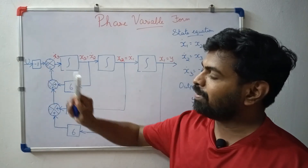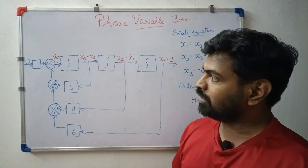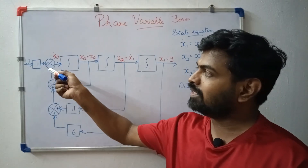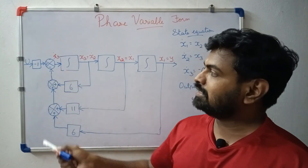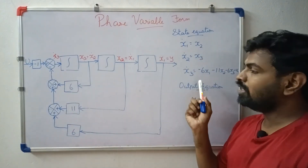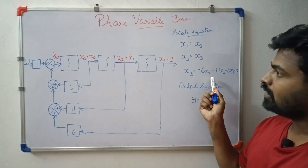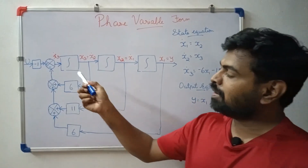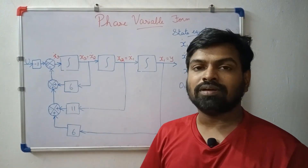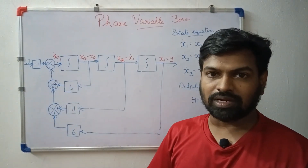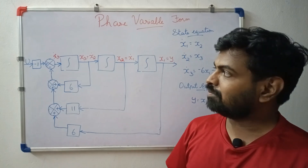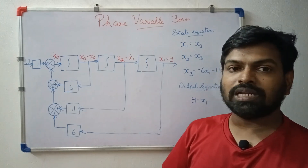We have minus u. So we have the complete set of equations, and now we have the full block diagram.